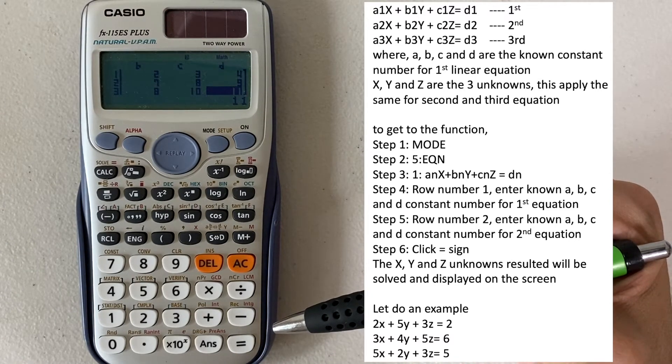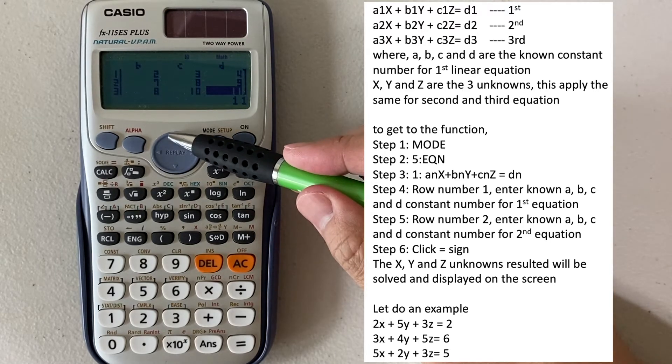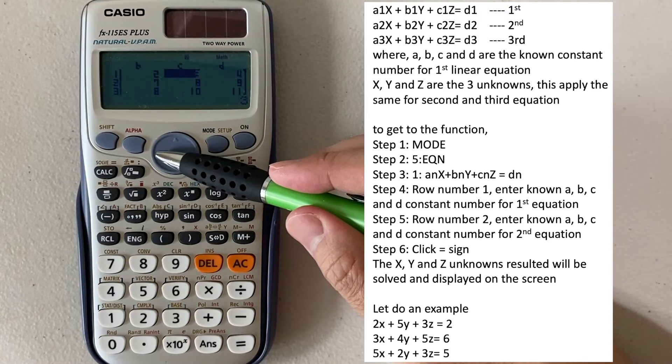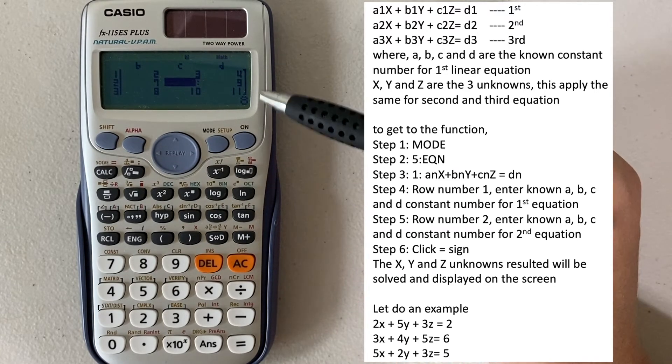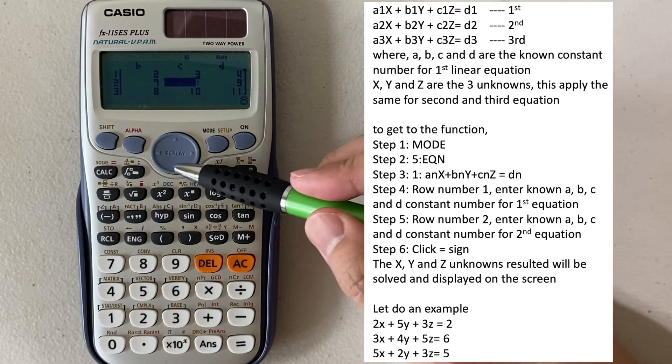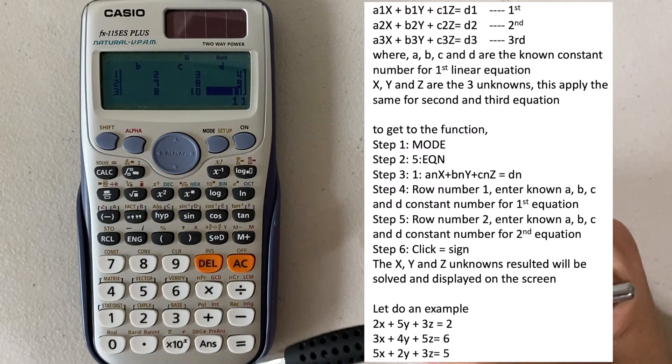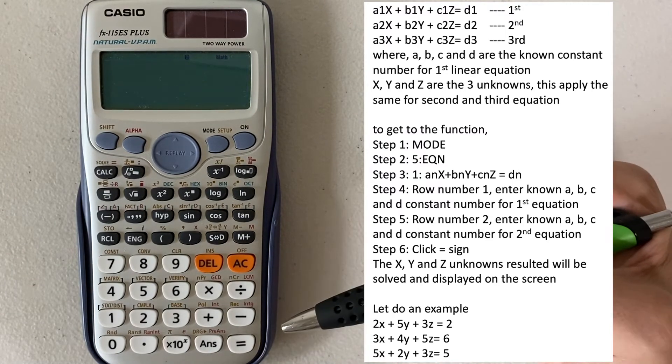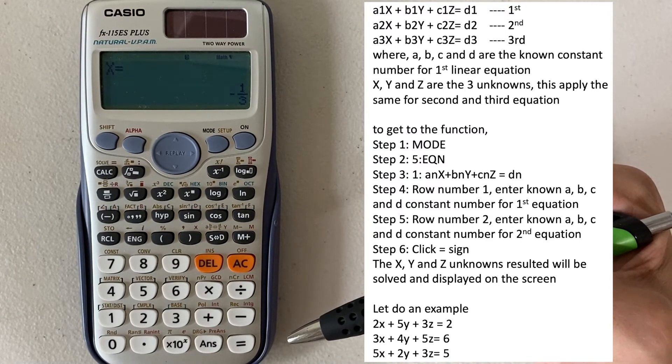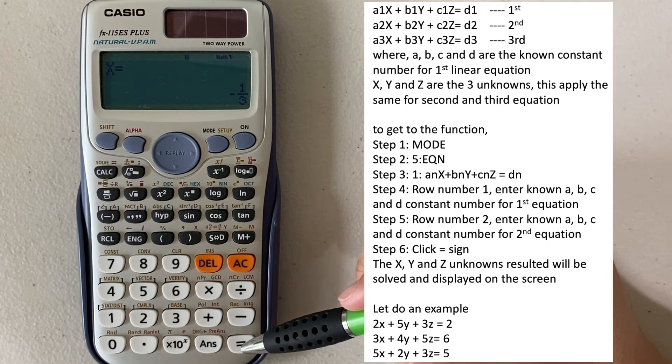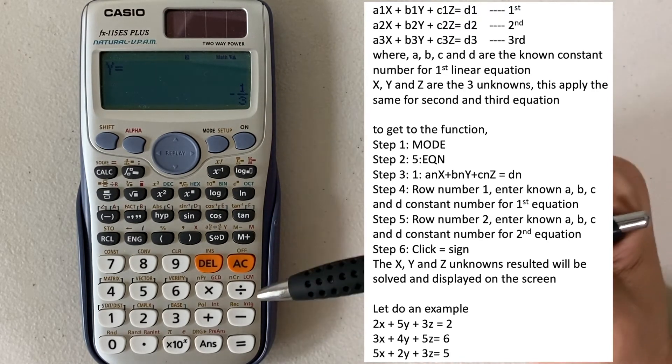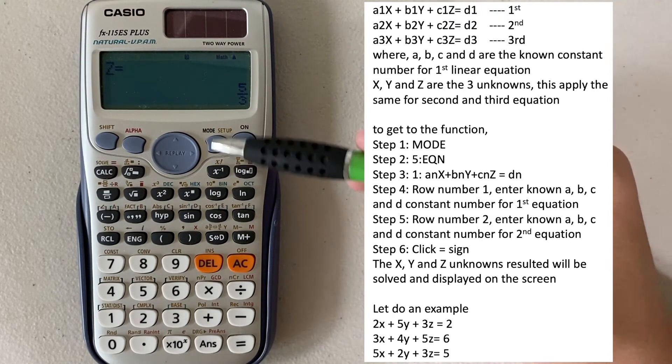If you wanted to make changes to any of the numbers in the columns or rows, you just move the cursor up and down. This is only allowed when you finish entering all the constants. Once you have everything entered, just click equal sign and it will solve for you X, and then equal again for Y, and the third time Z.